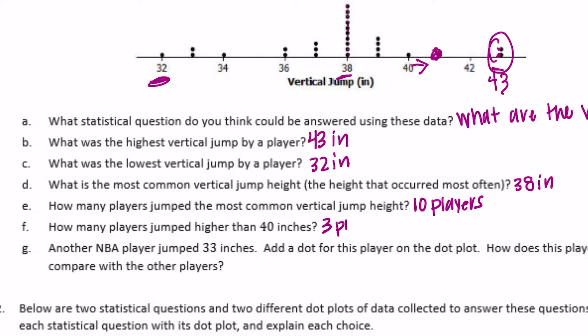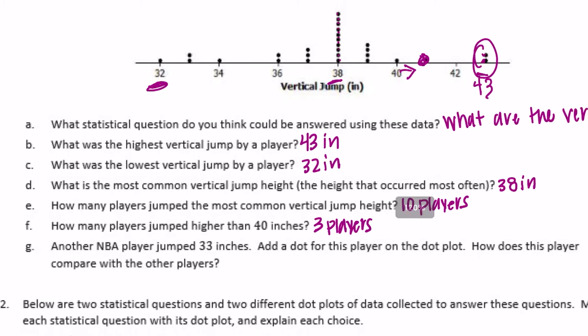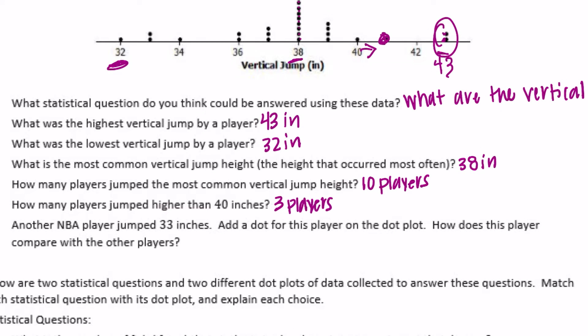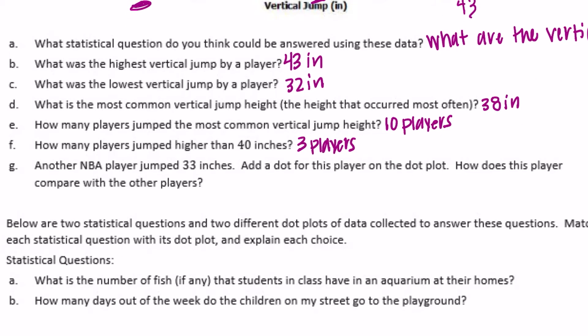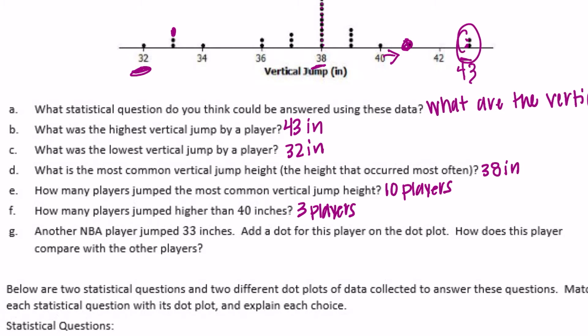Another NBA player jumped 33 inches. Add a dot for this player on the dot plot. So another one jumped 33 inches, let's find 33 right there, so add your dot. How does this player compare with the other players? They're at 33. I would say they're on the lower end of the vertical jump, so they didn't jump as high as the typical player. Let's say they jumped the same as two other players and only higher than one other player.